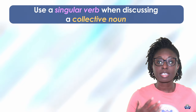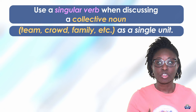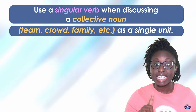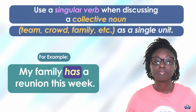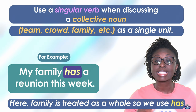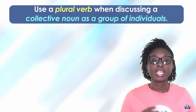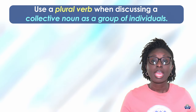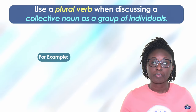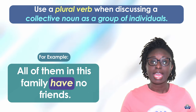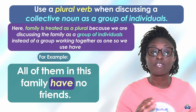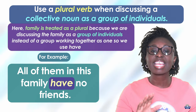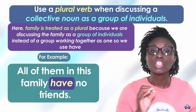Use a singular verb when discussing a collective noun like town or team. A collective noun as a group of individuals — for example: all of them in this family have no friends here. Family is treated as a plural because we are discussing the family as a group of individuals instead of a group working together as one. So we use have.